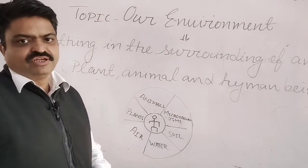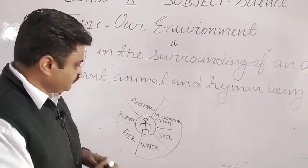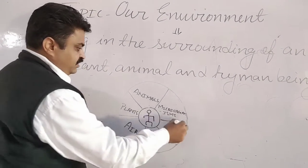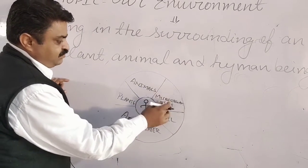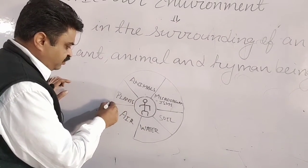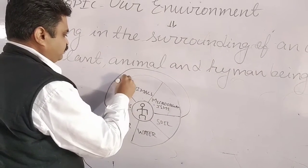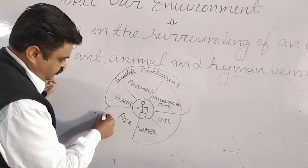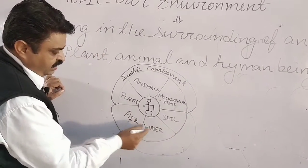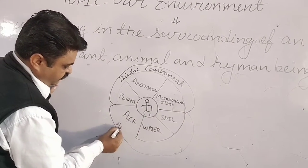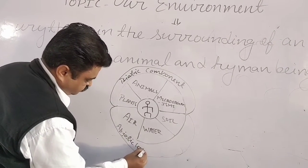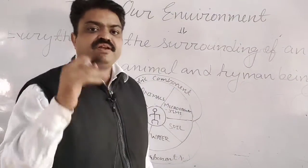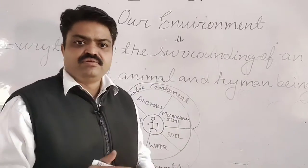I have drawn a diagram of the environment. In this diagram, one human being is surrounded by different things — some living and some non-living. One half shows plants, animals, and microorganisms, which are the biotic components. The other parts include air, water, and soil. So in our surrounding, there are different components: living organisms are known as biotic components, and non-living elements are abiotic components.